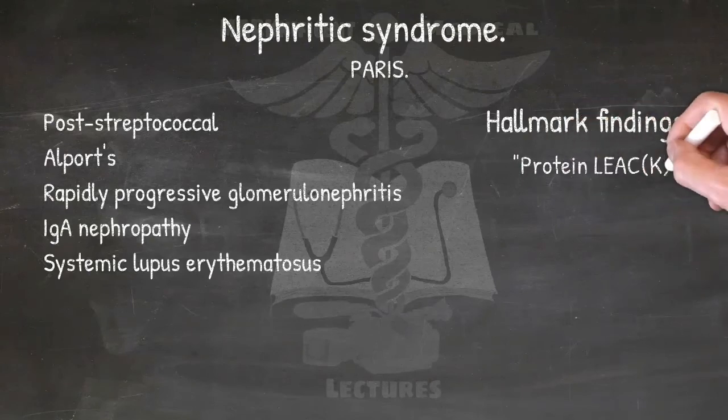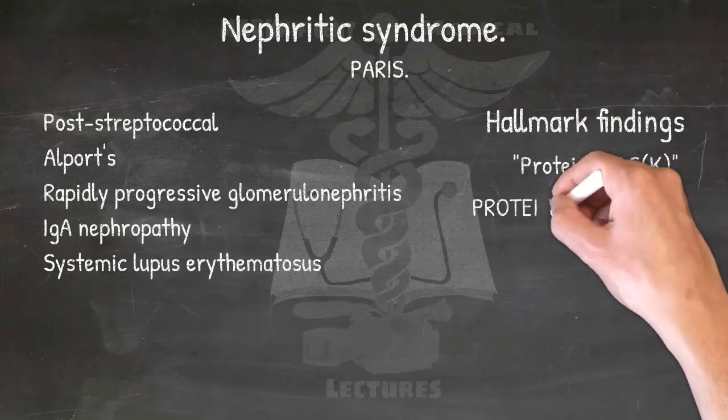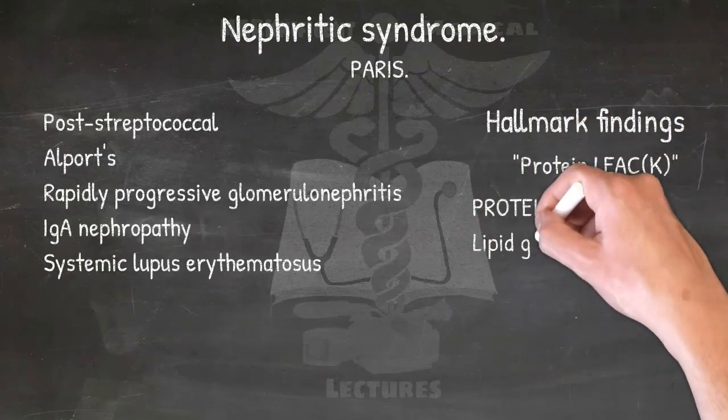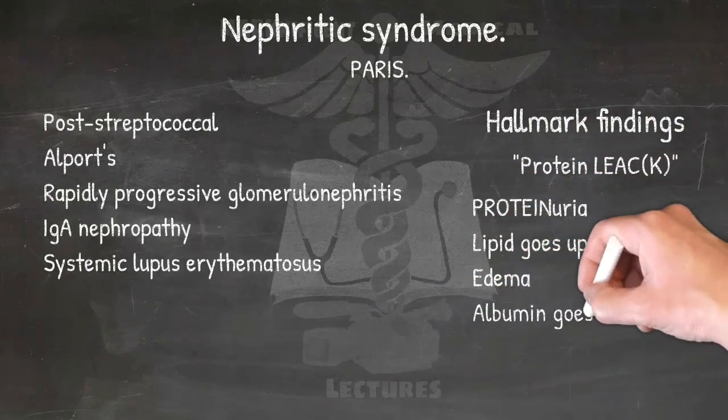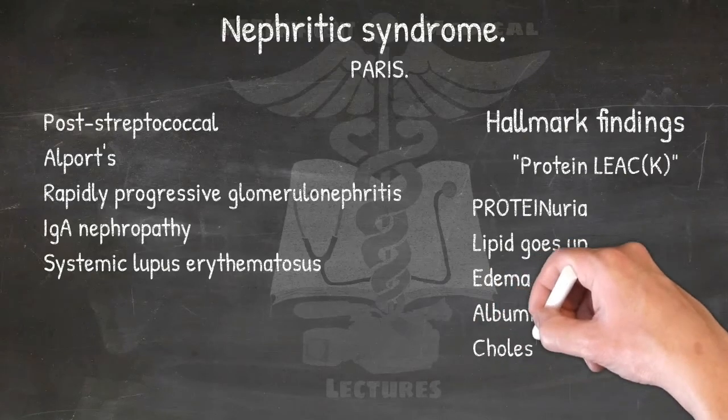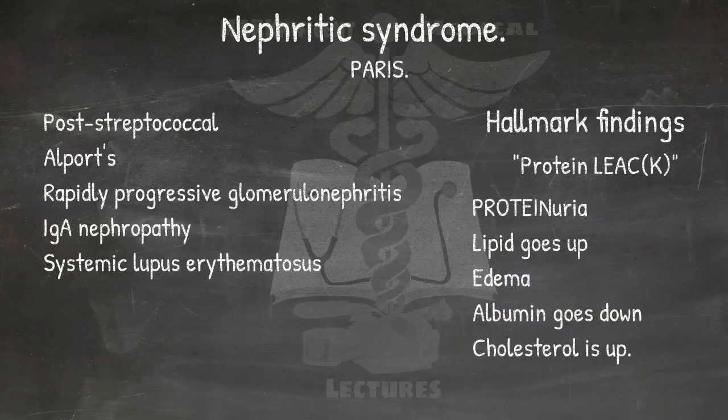Hallmark findings of nephrotic syndrome — PROTEIN LEAK: Proteinuria, Lipid goes up, Edema, Albumin goes down, and Cholesterol is up. In nephrotic syndrome, the proteins leak out.